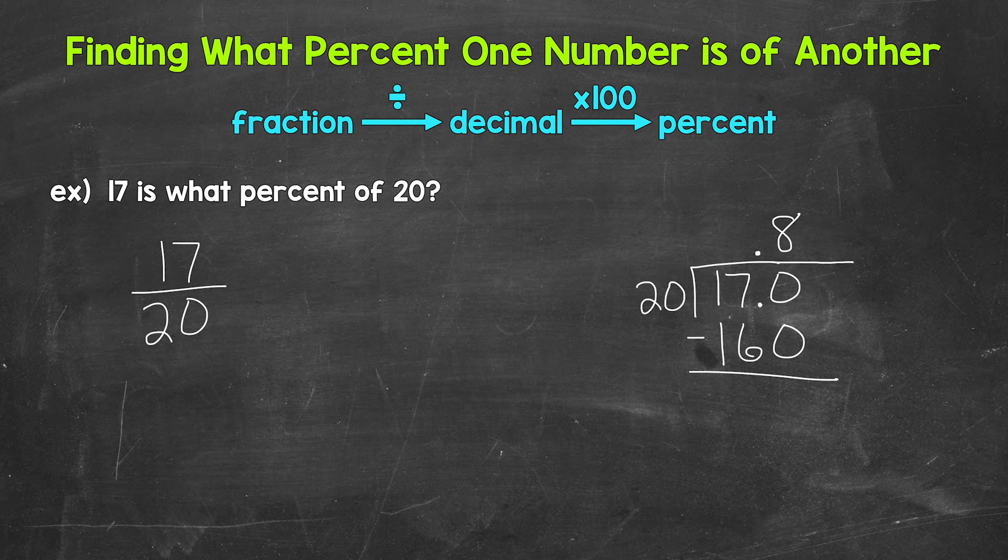Now multiply 8 times 20 is 160, subtract 170 minus 160 is 10. We don't have a clean cut zero there at the bottom, so we need to continue on.